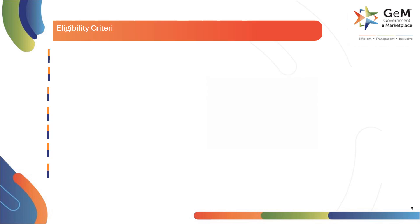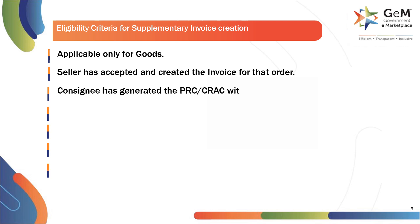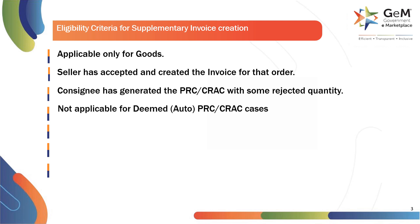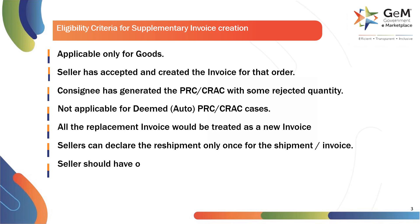Eligibility criteria for Supplementary Invoice creation are as follows: Applicable only for goods. Seller has accepted and created the invoice for that order. Consignee has generated the PRC-CRAC with some rejected quantity. Not applicable for deemed, auto, or PRC-CRAC cases. All replacement invoices would be treated as a new invoice. Sellers can declare the reshipment only once for the shipment invoice. Sellers should have the option to generate multiple invoices for the declared shipment.